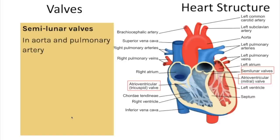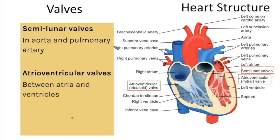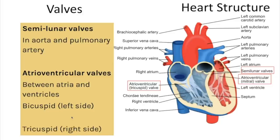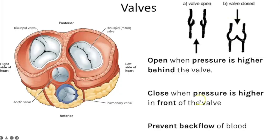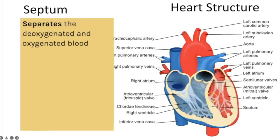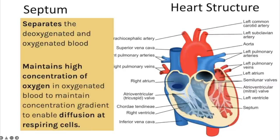Valves: semilunar valves are in the aorta and pulmonary artery; atrioventricular valves (also called bicuspid and tricuspid) are between the atria and ventricles. Valves prevent backflow of blood by opening only when pressure is higher behind them than in front — if pressure is higher in front, the valve shuts. The septum runs through the middle of the heart to separate deoxygenated and oxygenated blood, maintaining a high oxygen concentration on the oxygenated side to support diffusion at respiring cells.